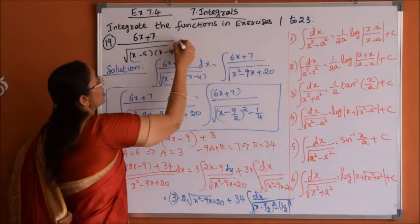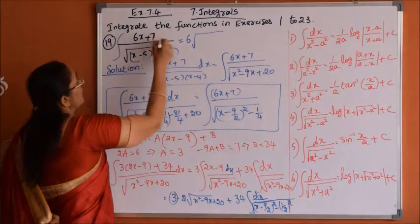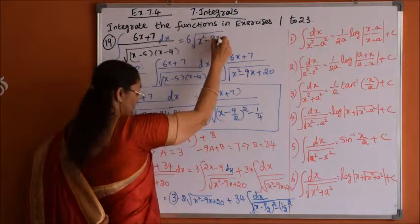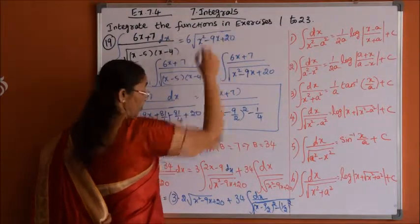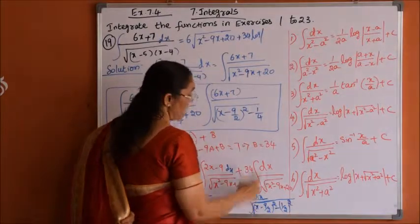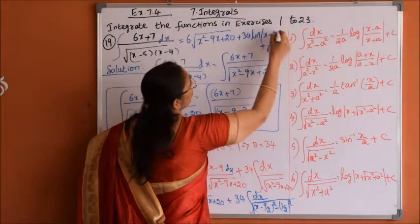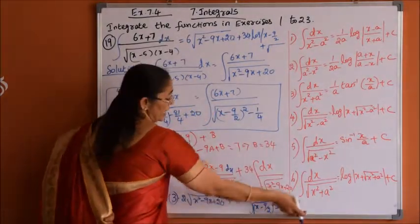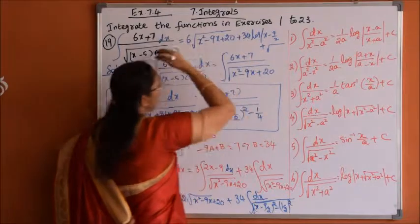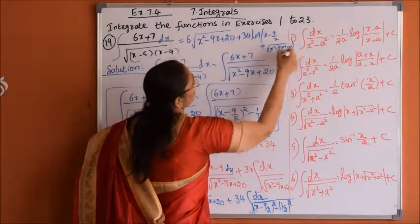Writing the final answer: the complete integration equals 6 root(x squared minus 9x plus 20) plus 34 times log mod of (x minus 9/2) plus root over (x squared minus 9x plus 20), where x squared minus 9x plus 20 is the same as (x minus 5)(x minus 4), plus the constant c.